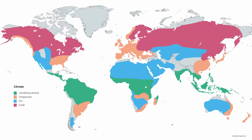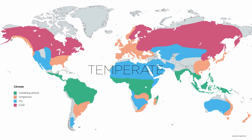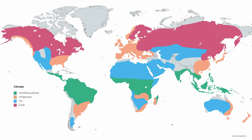First and foremost, we have our climates. I don't like to confuse my students with the six gazillion types of climates that textbooks like to force feed, because frankly I think they're a bit much. So I like to break it down into four major climate zones: humid equatorial, temperate, dry, and cold. And to a certain extent, these climates form along the latitudes.